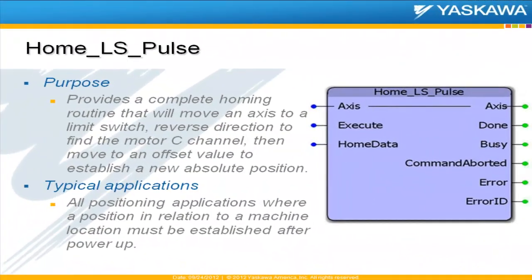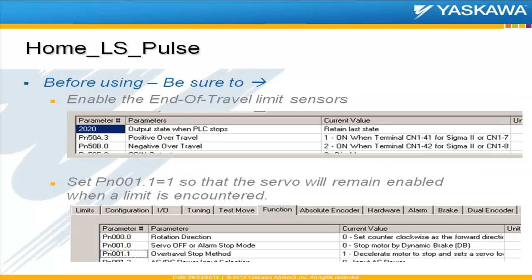We'll move on to the home LS pulse block, and it's a fairly straightforward procedure here. It provides a complete homing routine — it'll move an axis to a limit switch, reverse direction, find the motor C channel, and then move to an offset value and establish a new position. Even applications that use an absolute encoder need some sort of reference routine like this.